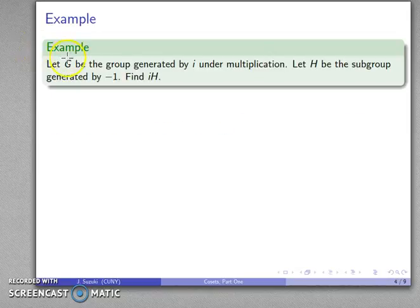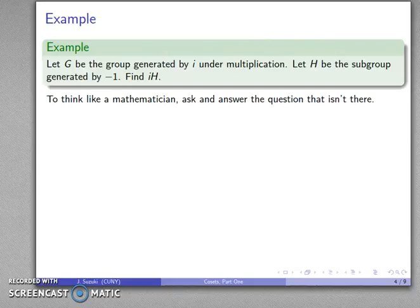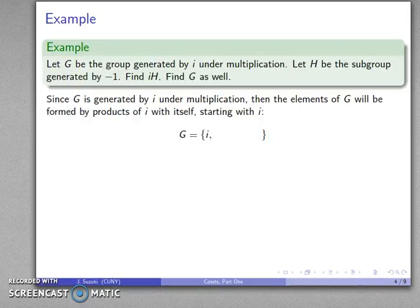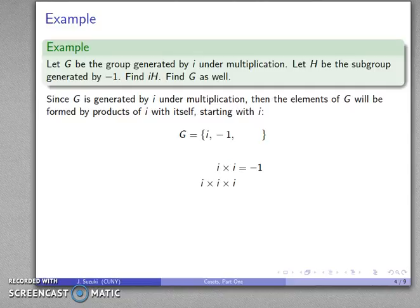So for example, let's let G be the group generated by i under multiplication — that's our complex number i. And let's consider the subgroup generated by -1, and we'll find the left coset IH. Thinking like a mathematician, one of the things to do is ask and answer questions that aren't explicitly there. I've talked about a subgroup generated by something, but I haven't said what the whole group is. So let's find the group as well. Since i is the generator of our group, I'll find the elements of G by repeatedly multiplying i with itself. That starts with i. I squared is -1. I times i times i is -i.